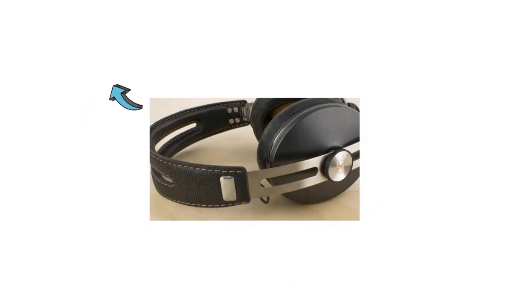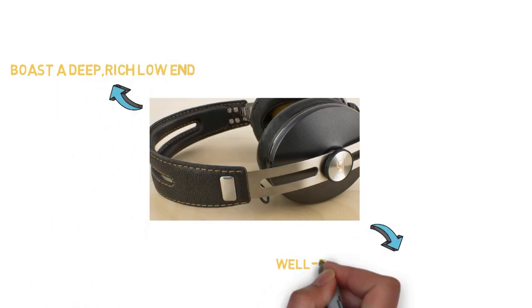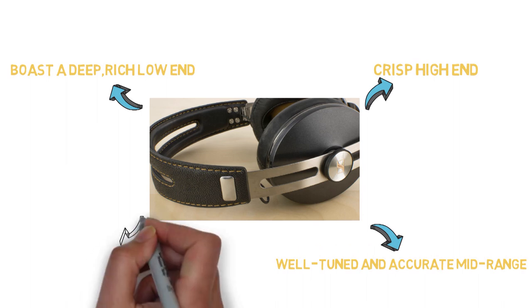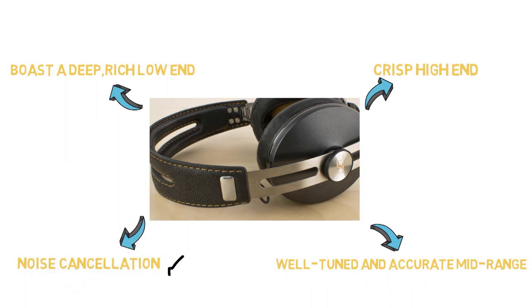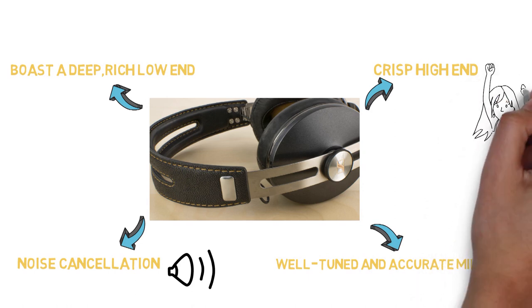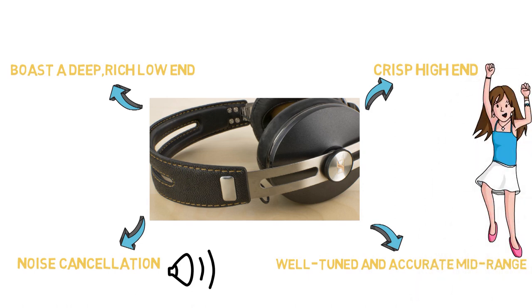The Sennheiser wireless over-ear headphones boast a deep, rich low-end, along with a well-tuned and accurate mid-range, and crisp high-end. They also have noise cancellation, and while it's a little annoying that you can't deactivate it if you want, it will help keep that extra noise out so you can listen to your music in peace.